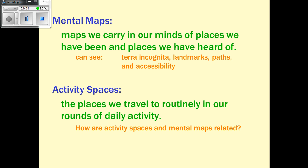Mental maps are maps we carry in our mind of places we've been or heard of — we use them when giving directions, visualizing the route as we describe it. Activity space is the area in which we participate in activities: where we go to the grocery store, where we work out, where we go to school — all of those are activity spaces.